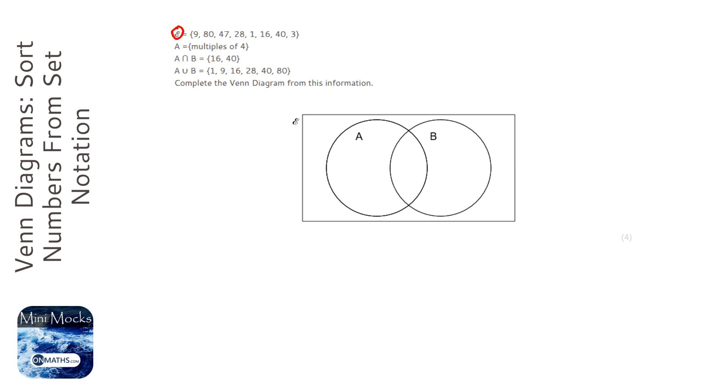Now it says that A is all the multiples of four. So we know all the multiples of four are going to A, but we can't fill them in yet because we don't know whether they're just in A or in that overlap. So this is what the next piece of information is going to be.